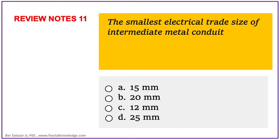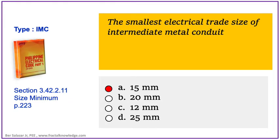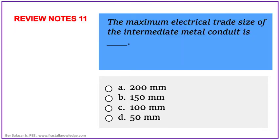The third problem asks: what is the smallest or minimum trade size of IMC? Is it 15 mm, 20 mm, 12 mm, or 25 mm? The answer is letter A: 15 mm or one-half inch. You can check it in PEC section 3.42.2.11, page 223, for IMC minimum sizes.